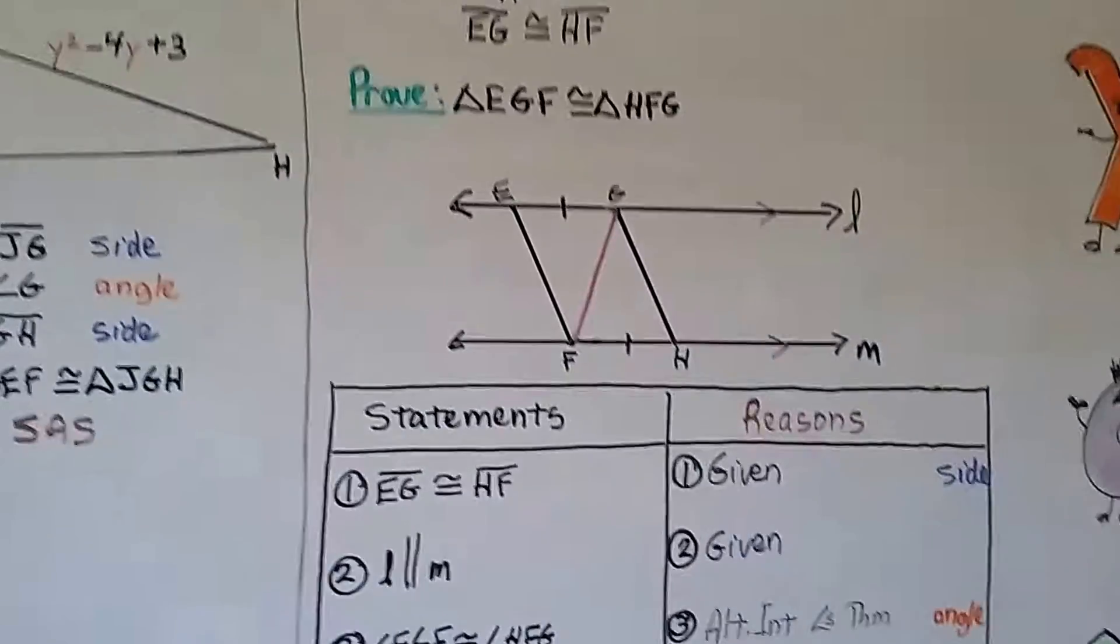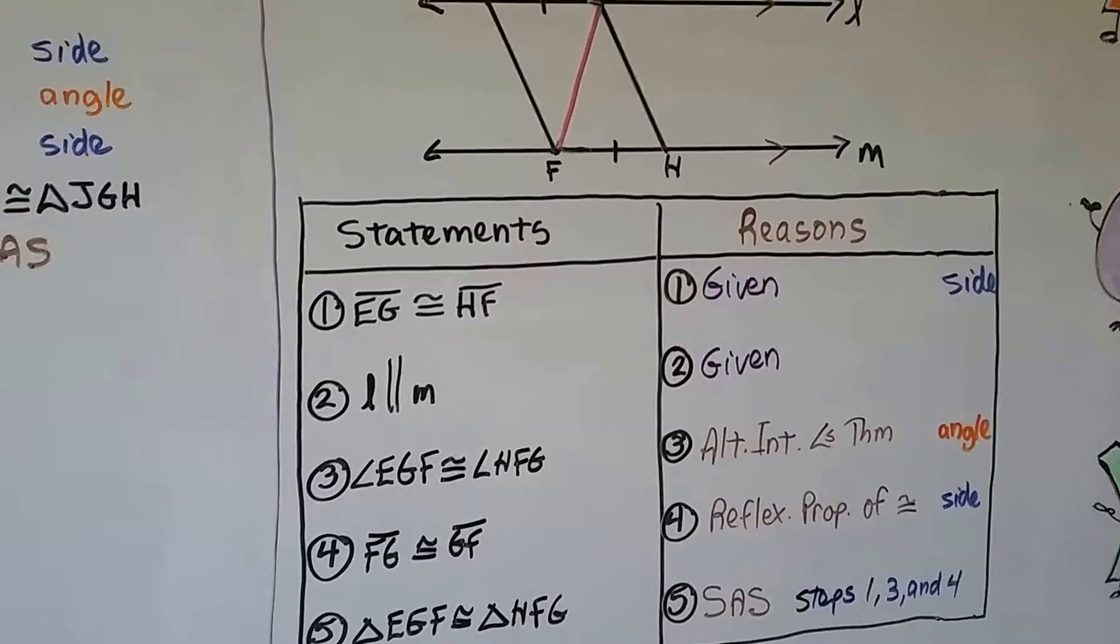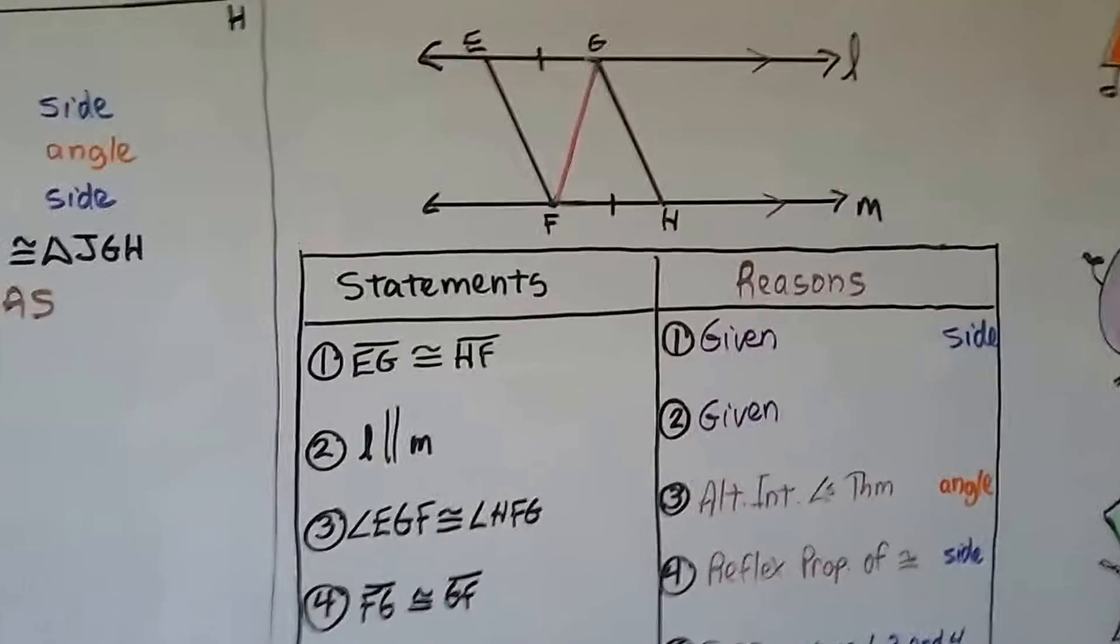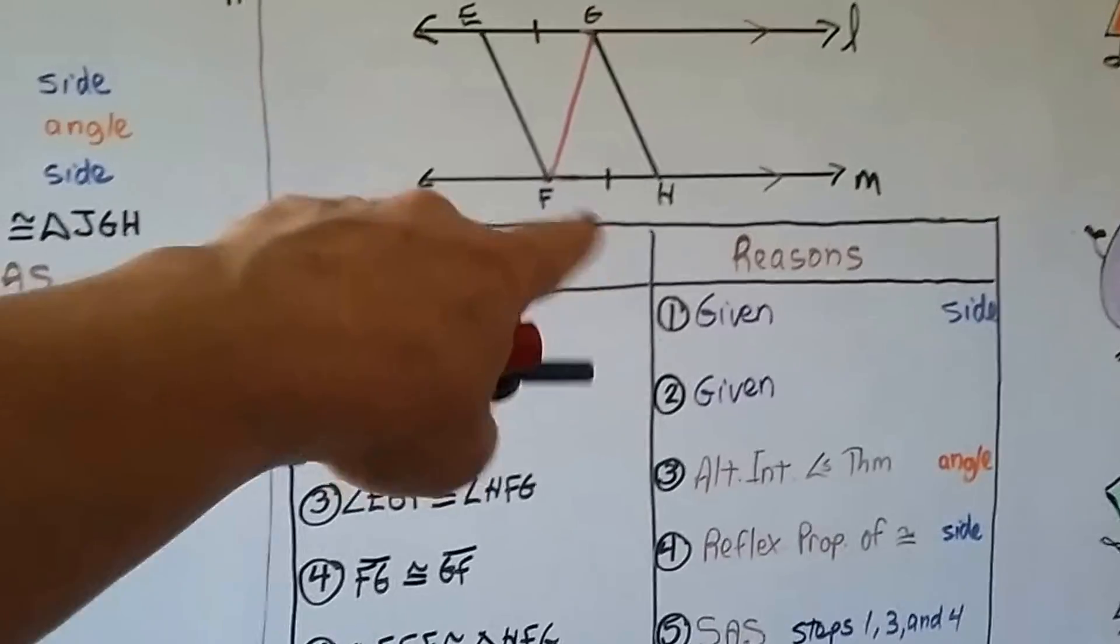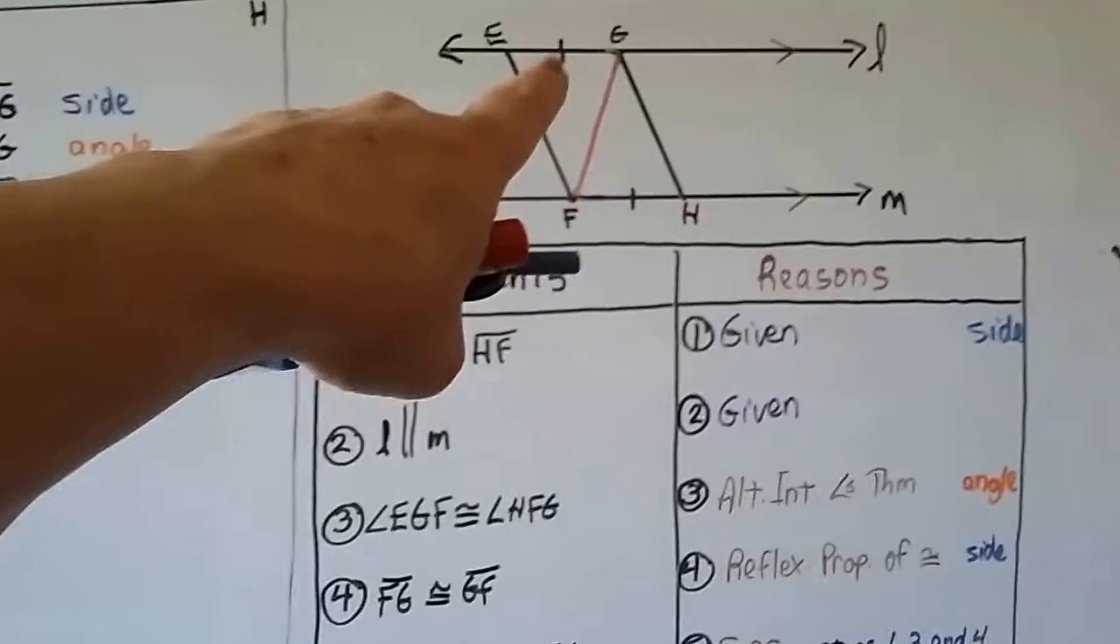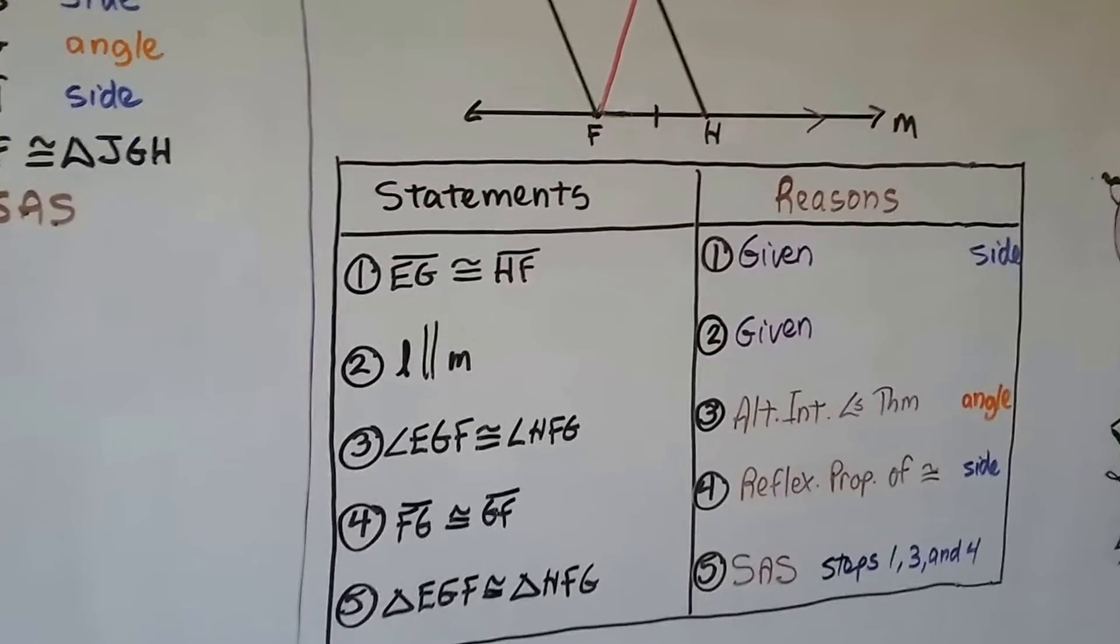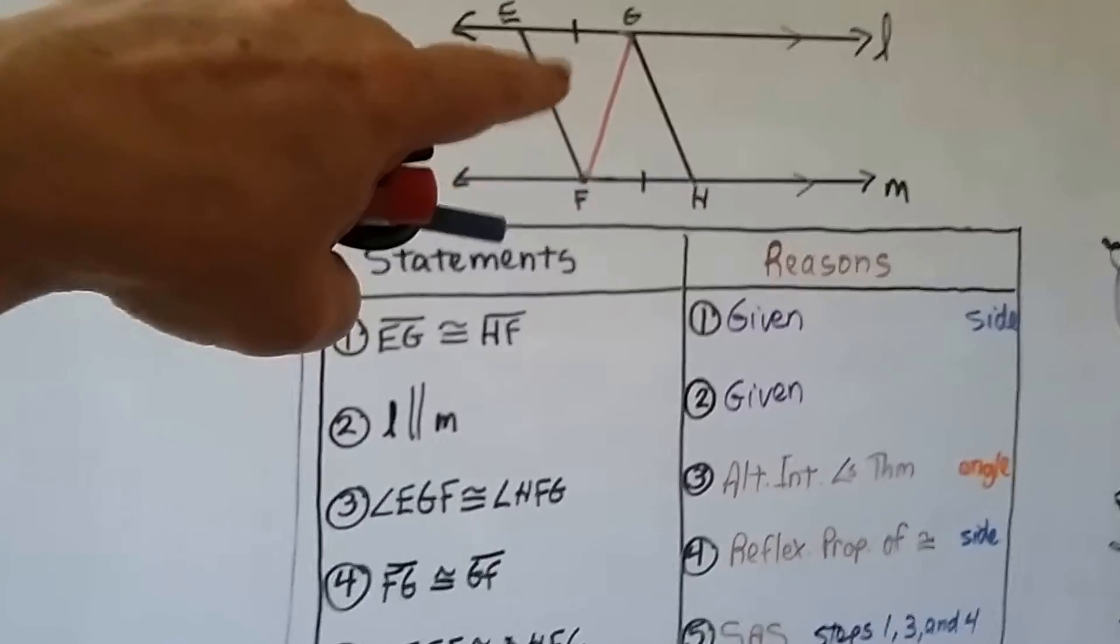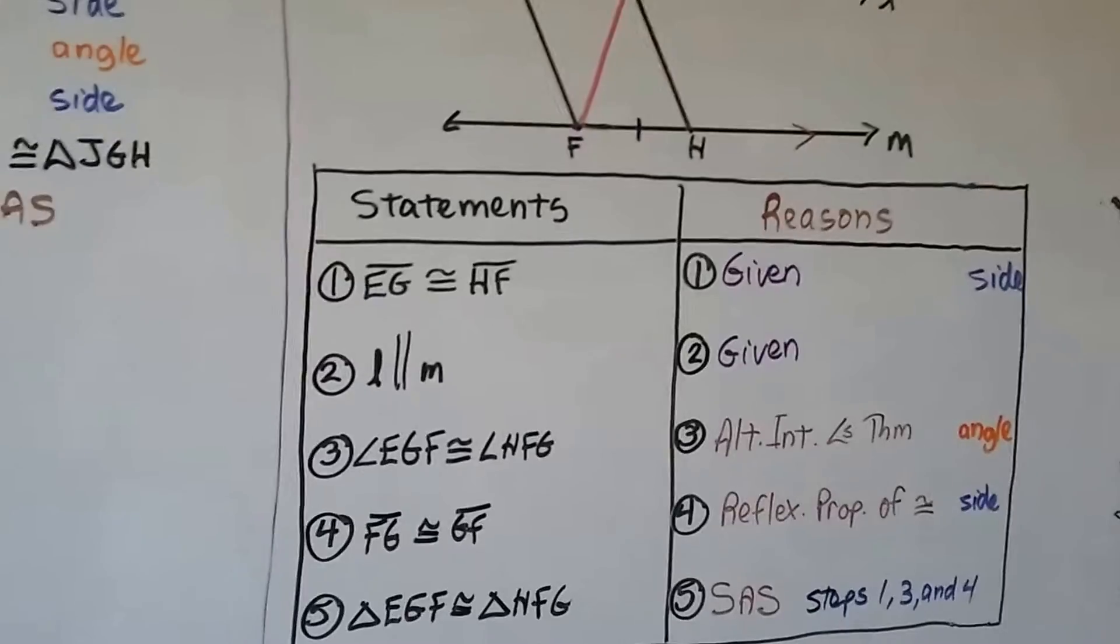Our third one is angle EGF is congruent to angle HFG because of the alternate interior angles theorem. This angle here is congruent to this angle because of alternate interior angles theorem. We have parallel lines and we can look at GF as a transversal. So those would be alternate interior angles. Number four is FG is congruent to GF. GF that's used for this triangle is congruent to FG that's used for this triangle. That's the reflexive property of congruence.